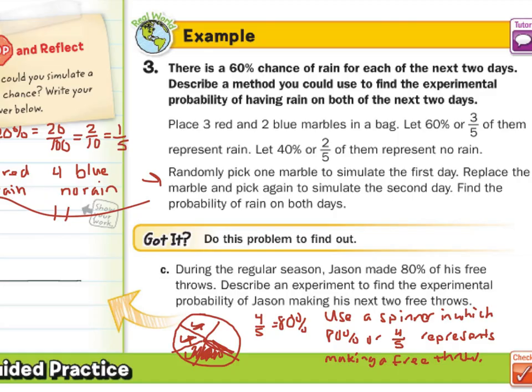You would spin the spinner twice and see what you get. And that is it for this lesson on simulations. You'll be modeling equally likely outcomes and unequally likely outcomes. Sometimes you'll just be writing the simulation. Other times you'll be writing a simulation and performing it. Good luck!